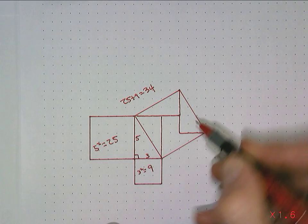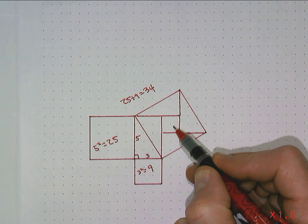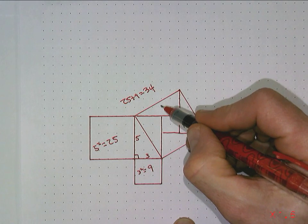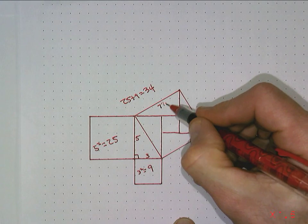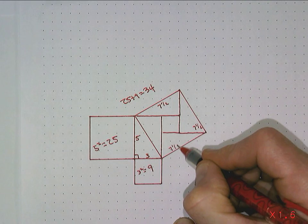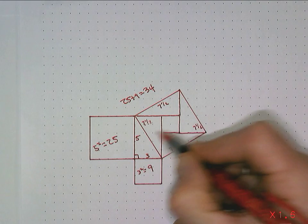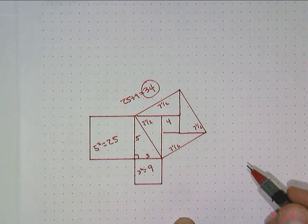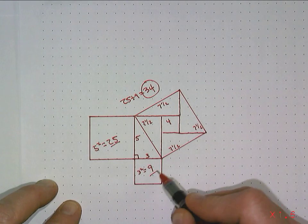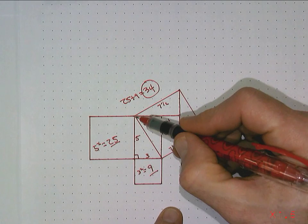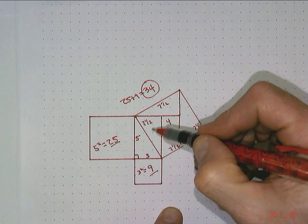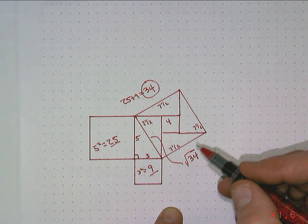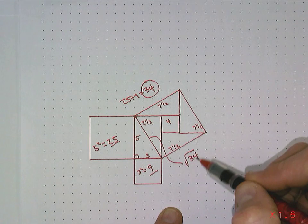I like to cut these into triangles and squares. There are 4 squares in the middle, and then each of the four triangles has an area of 7 and a half. So 4 times 7.5 is 30, plus 4 in the middle, gives a total of 34 square units. So it works — 25 plus 9 is 34. The whole point is to get the length of this hypotenuse side, which is the square root of 34.